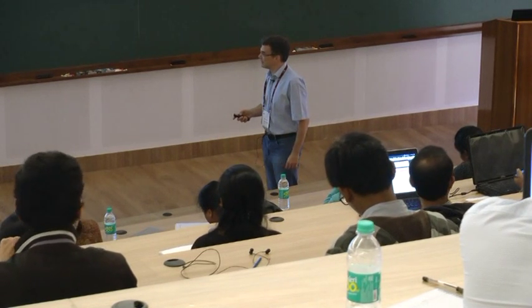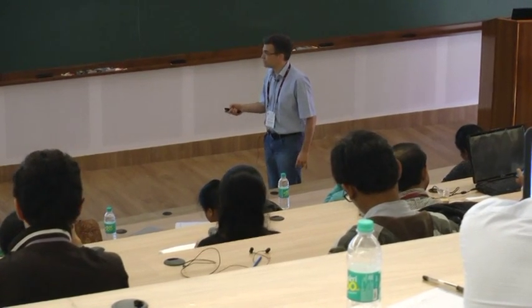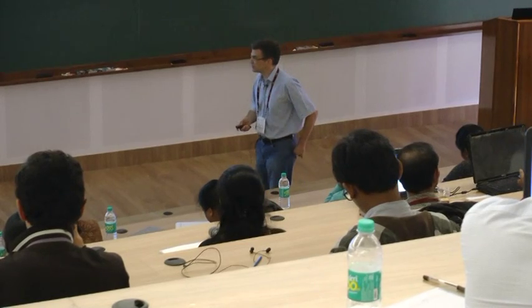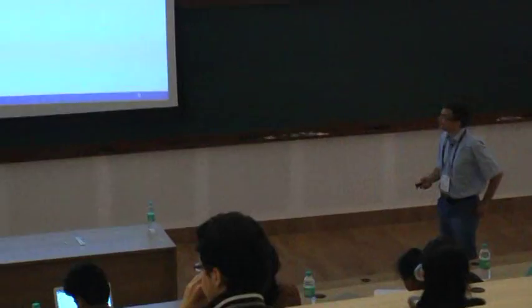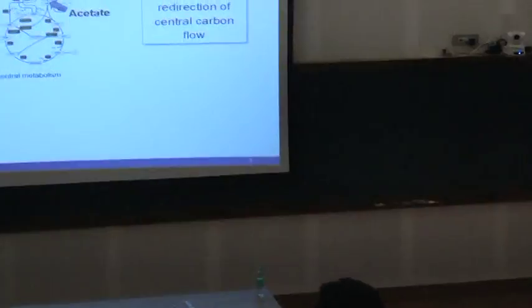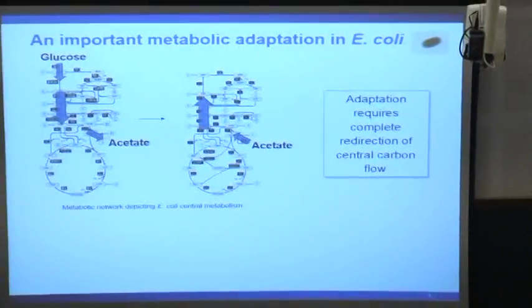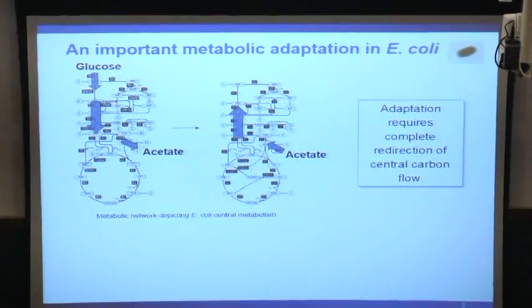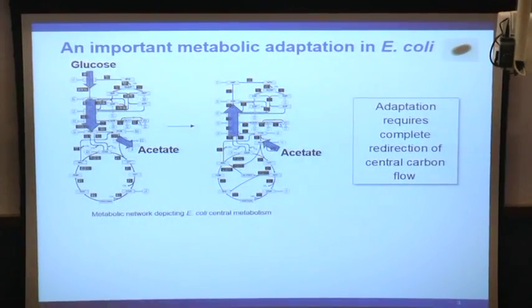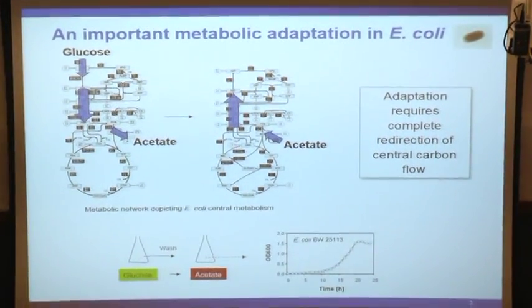Still the same example as yesterday - we look at nutrient adaptation from E. coli adapting from glucose to acetate. Important is that there's a complete redirection of the carbon flow necessary.